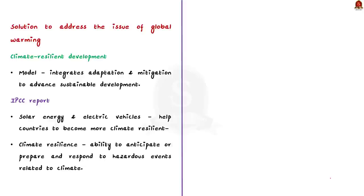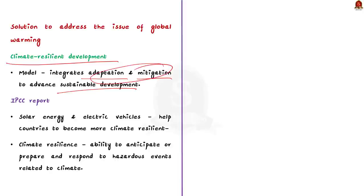What are the solutions to address global warming? The IPCC report advocates the adoption of climate-resilient development as soon as possible. Climate-resilient development is a developmental model that integrates both adaptation and mitigation to advance sustainable development for all. In reality, countries should focus on both adaptation and mitigation to limit the temperature rise to 1.5 degrees Celsius above pre-industrial levels. The IPCC report also assessed many technologies and design options such as solar energy and electric vehicles, saying that these green technologies can help countries reduce emissions or become more climate-resilient in a technically feasible manner.